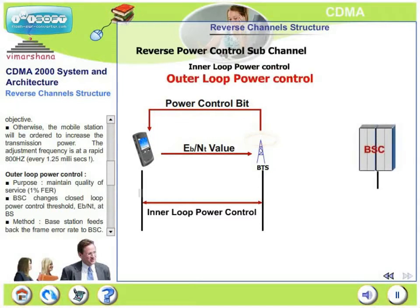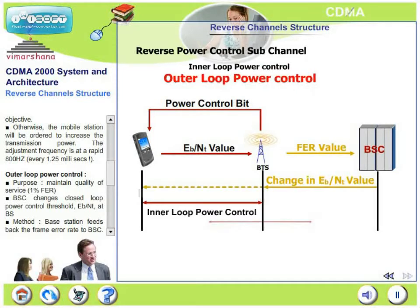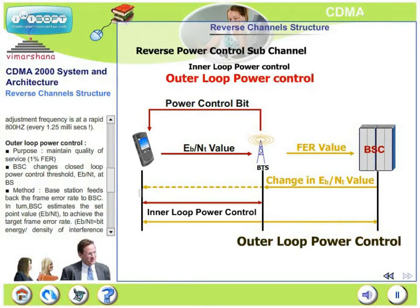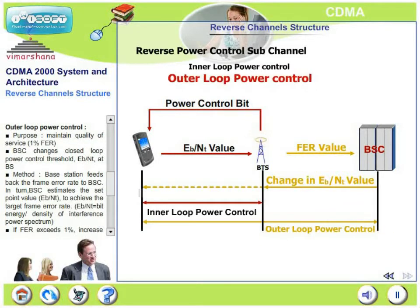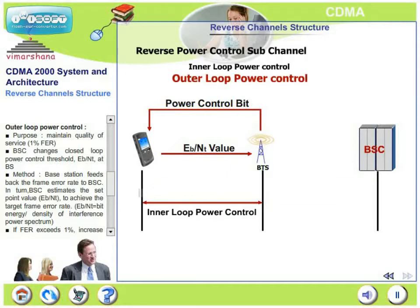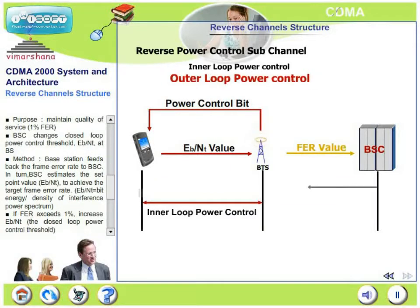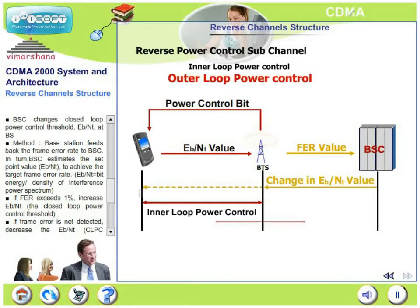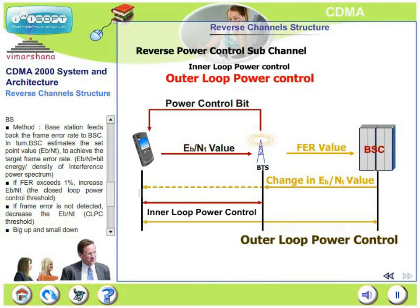Now let's look at the outer loop power control. Its purpose is to maintain quality of service, specifically keeping the frame error rate below 1%. The base station controller (BSC) changes the closed-loop power control threshold Eb/Nt at the base station. The base station feeds back the frame error rate to the BSC, and in turn the BSC estimates the set point value — that is, the Eb/Nt — required to achieve the target frame error rate.